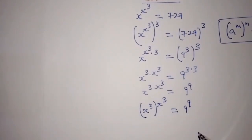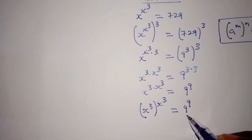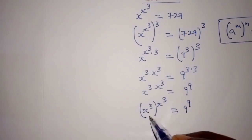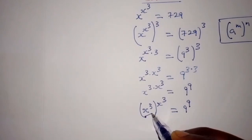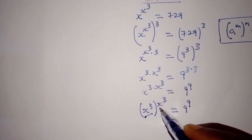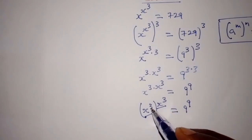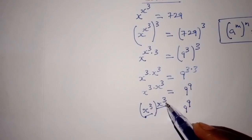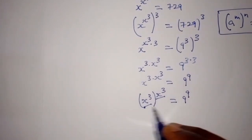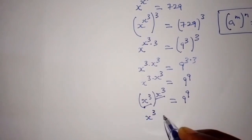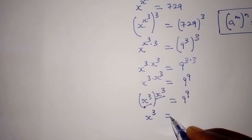Now you can see that our base here is 9 and the power is 9 — the base is equal to the power. On the other side, our base is x power 3 and our power is also x power 3. So since 9 equals 9, that means x power 3 is also equal to x power 3, and therefore x power 3 is equal to 9.